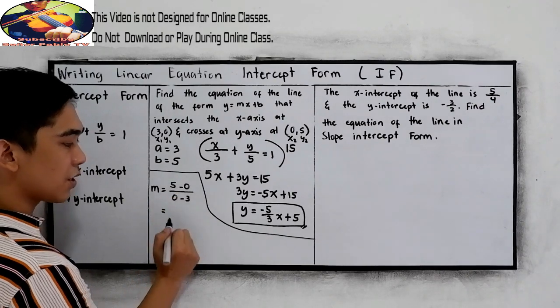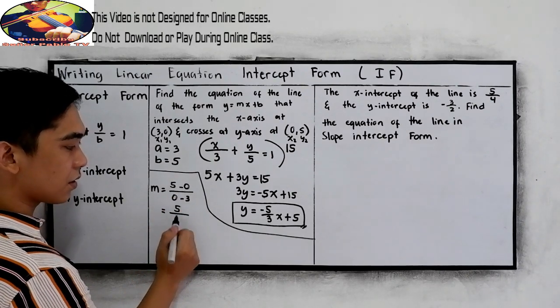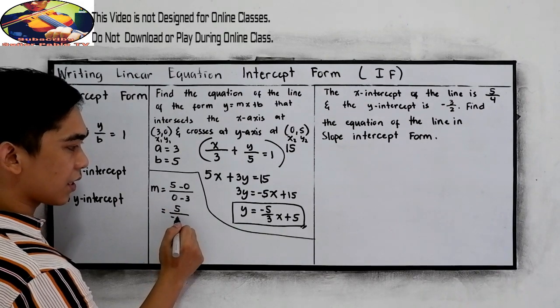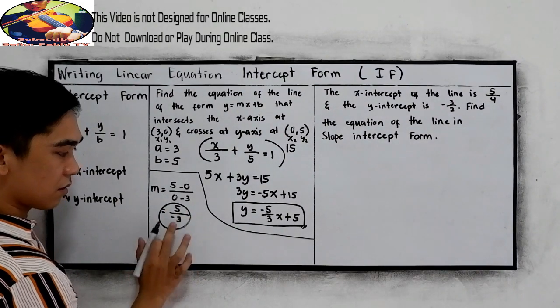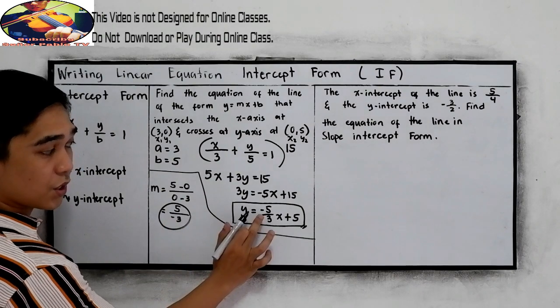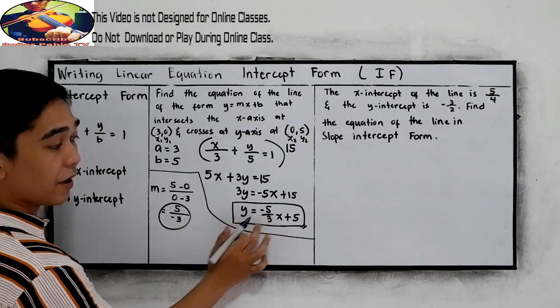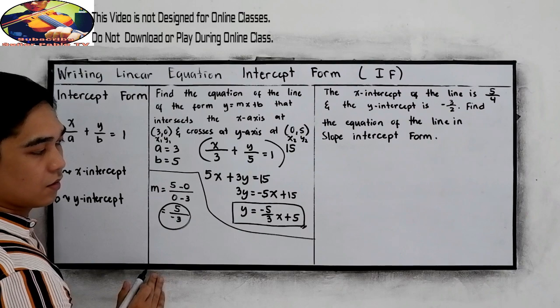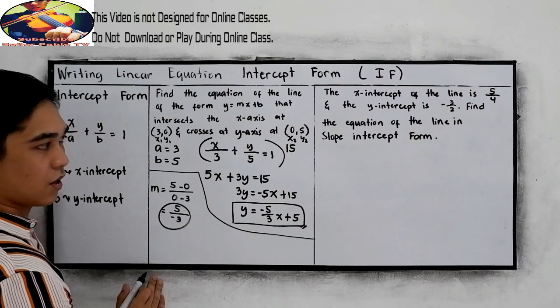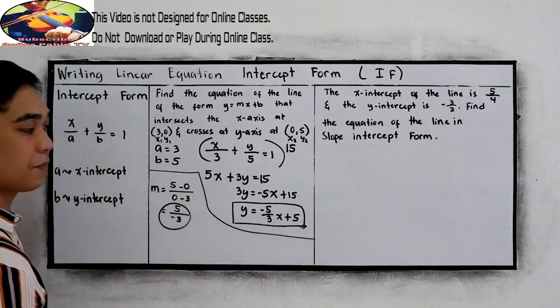So, 5 minus 0, that is 5, all over 0 minus 3, negative 3. That will be our m, which is correct. Our m here is negative 5 over 3. Okay, since we're given the y-intercept, we can write it in this form.